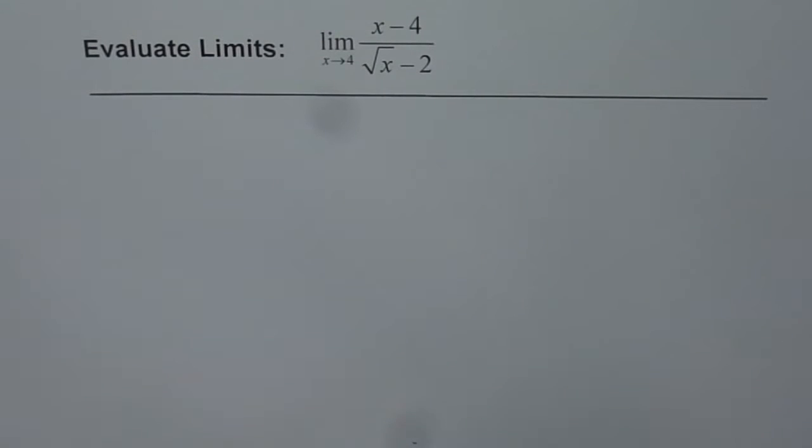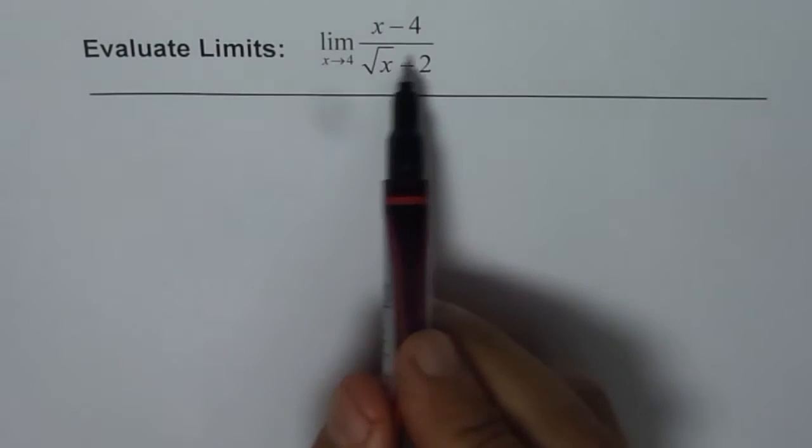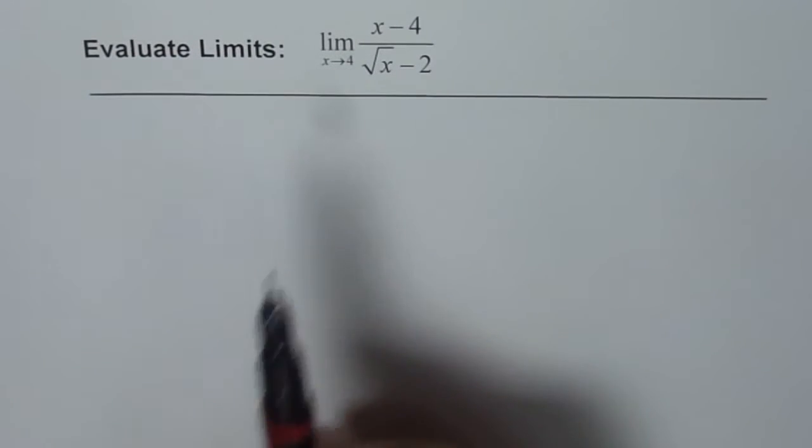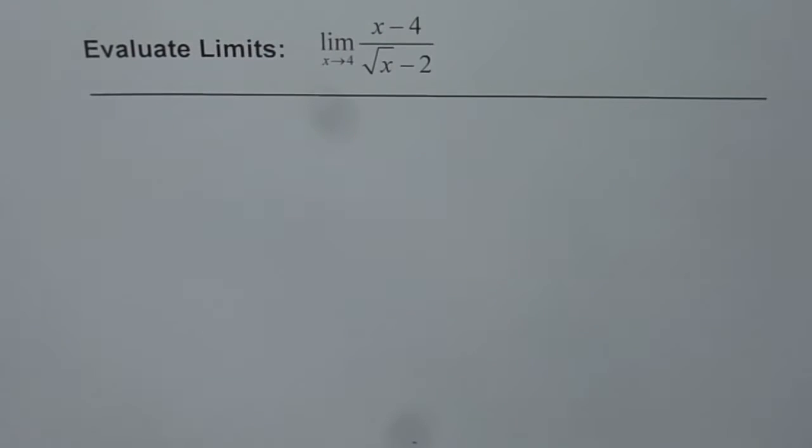Evaluate limits. We have x minus 4 divided by square root of x minus 2, where x approaches 4. So we need to find the limit of this function.